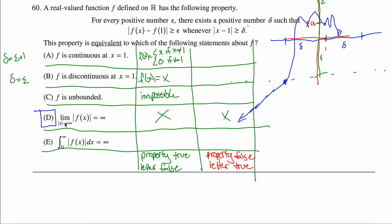Answer D is the correct answer, so we don't need counter-examples there. For answer E — the integral from zero to infinity of the absolute value of f of x equals infinity — if this is false, the integral converges to a finite number. But if the integral is finite, the function can't go up forever in one direction or down forever in the other. That's impossible to satisfy the property.